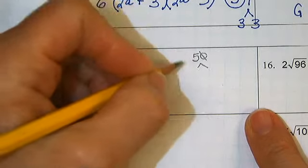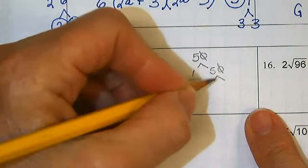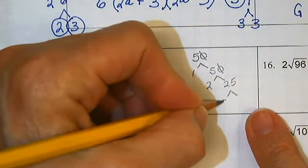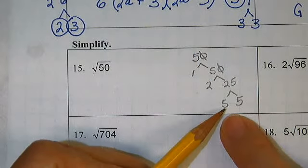We have fifty, one and fifty, two and twenty-five, five and five. Five we notice is a prime number.